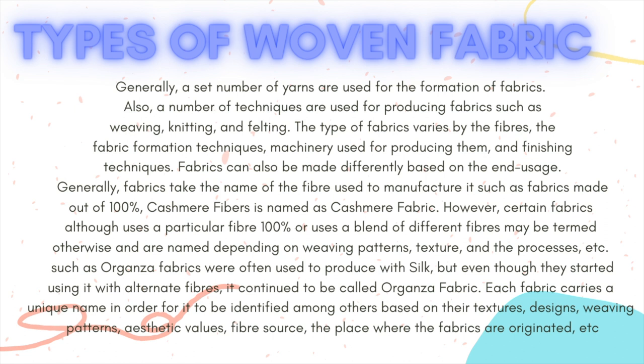For example, organza fabrics were often produced with silk, but even though they started using alternative fibers, it continued to be called organza fabric. Each fabric carries a unique name in order for it to be identified among others, based on their textures, designs, weaving patterns, aesthetic value, fiber source, and the place where the fabrics originated, etc.